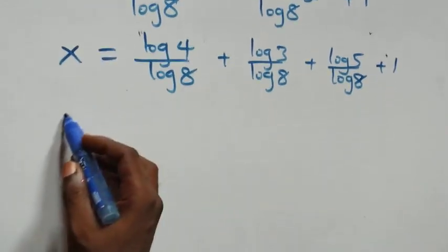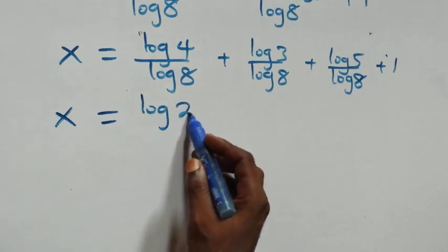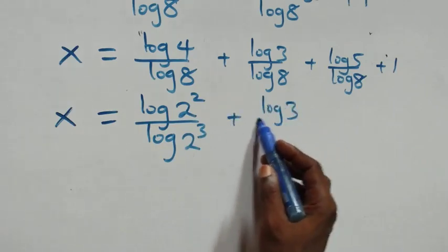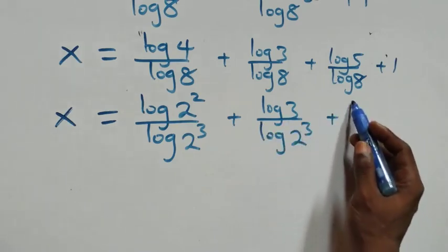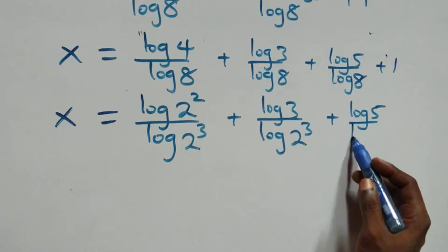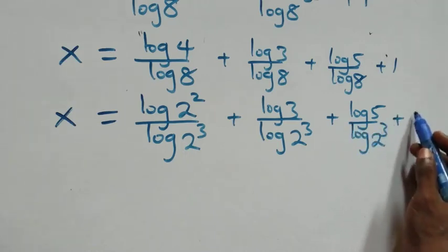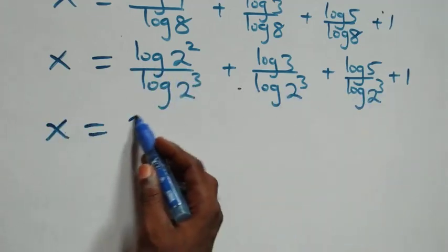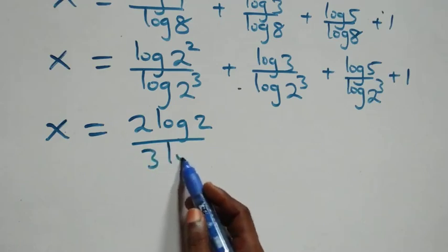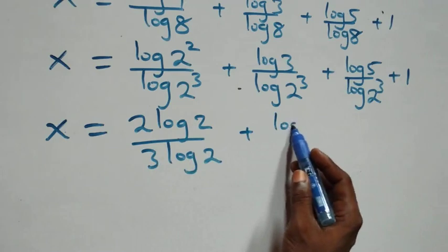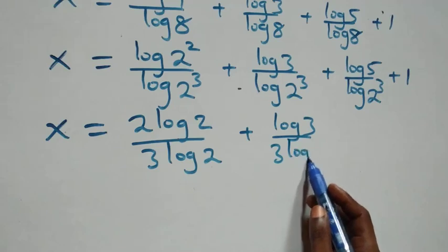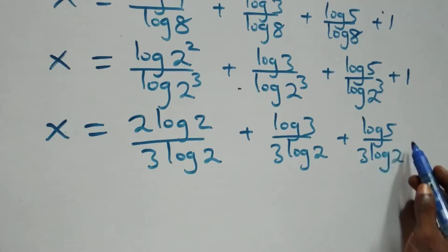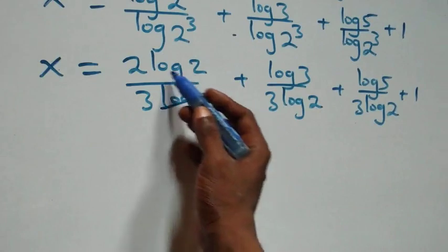Next, we rewrite: log 4 can be expressed as log(2 raised to power 2), and log 8 as log(2 raised to power 3). Applying the power law of logarithms, 2 log 2 over 3 log 2 plus log 3 over 3 log 2 plus log 5 over 3 log 2 plus 1. Log 2 cancels in the first term, leaving 2 over 3.